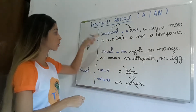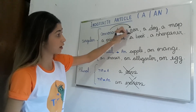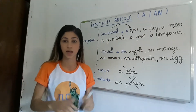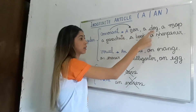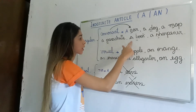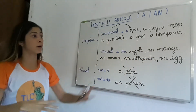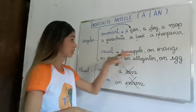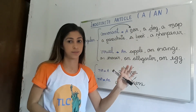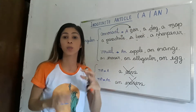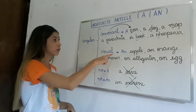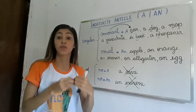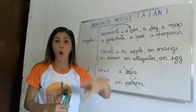Because car starts with a consonant. All those examples — car, dog, map, book — start with a consonant, so I have to use A. One car, one dog, one book, one pencil sharpener — all singular. And when do I use AN? When my word, my object, starts with a vowel: A, E, I, O, U.